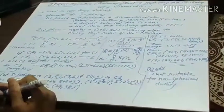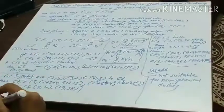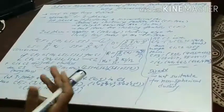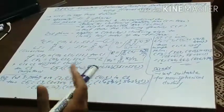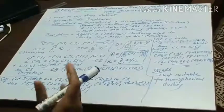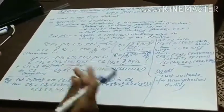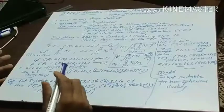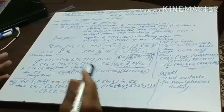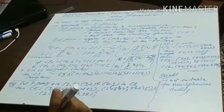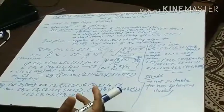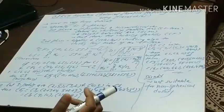Now, what is the disadvantage of this BIRCH algorithm? Like other hierarchical clustering, it also supports spherical-shaped clusters, but for arbitrary-shaped or non-spherical-shaped clusters it is not suitable. This is the BIRCH algorithm.